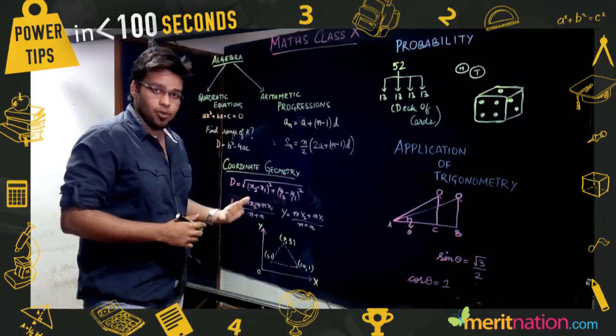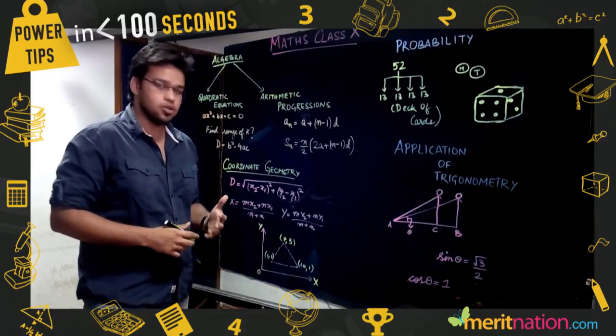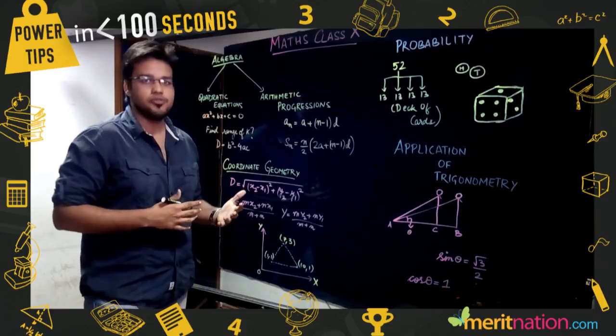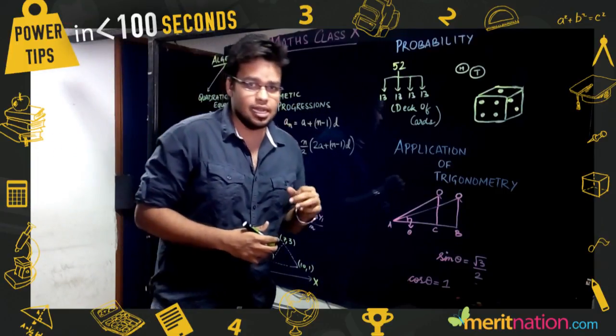It has just three formulas: distance formula, section formula, and area of triangle. Once you start revision, go for Coordinate Geometry to boost up your confidence. Now coming to another unit, that is Probability.